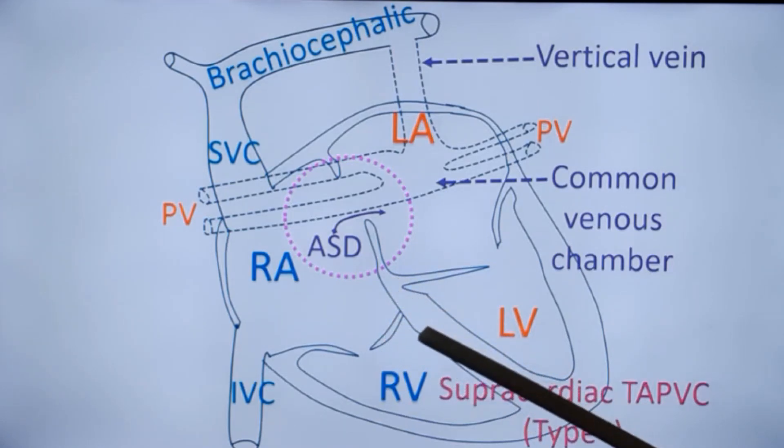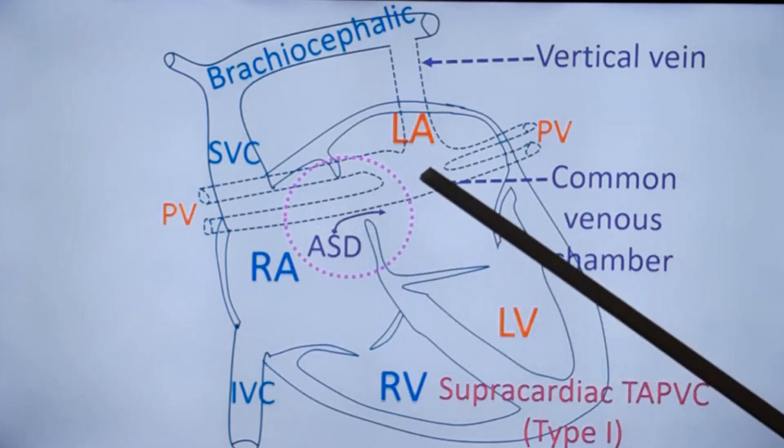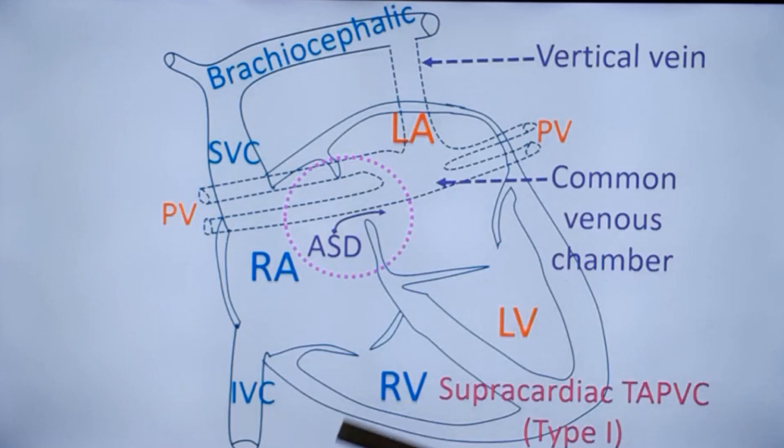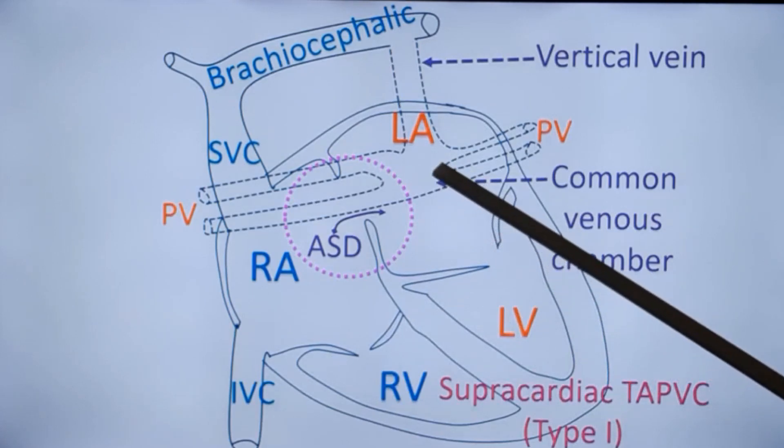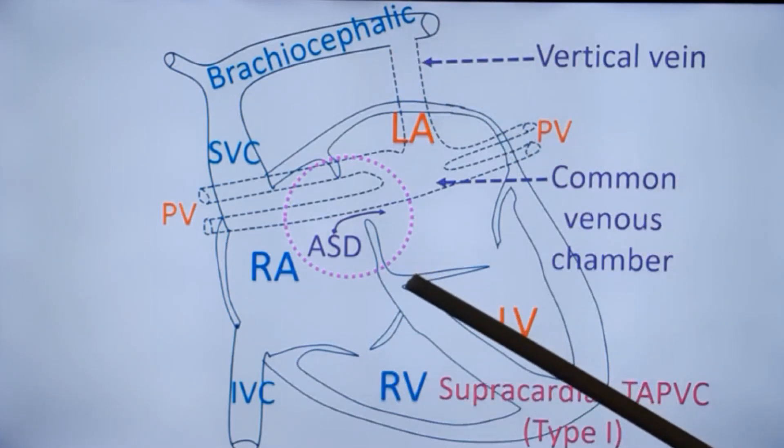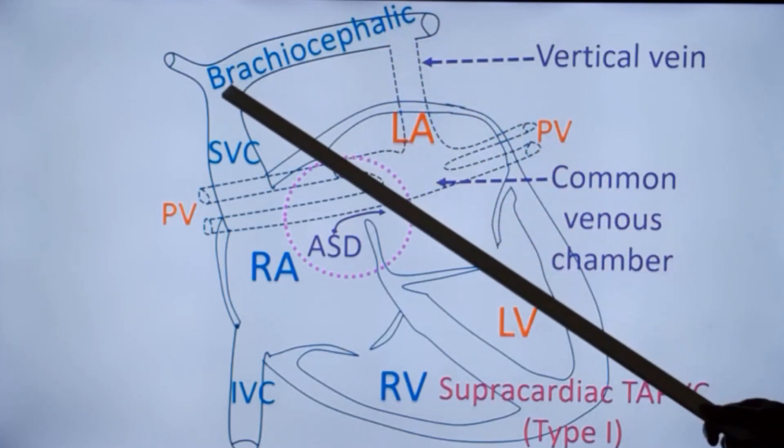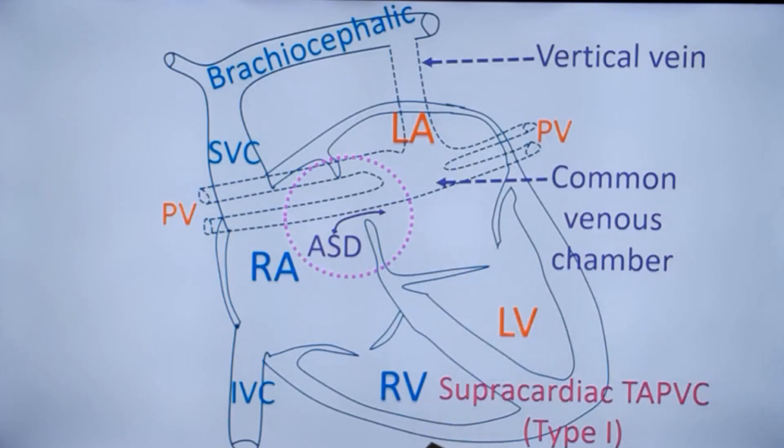There are three types of TAPVC. One is the Supracardiac TAPVC, type 1. In this condition, all the pulmonary veins drain to a common venous chamber. This is usually situated behind the left atrium. And from the common pulmonary venous chamber, a vertical vein goes upwards and drains into the brachiocephalic vein. From the brachiocephalic vein, the blood reaches the SVC. That is the circuit in type 1 or Supracardiac TAPVC.